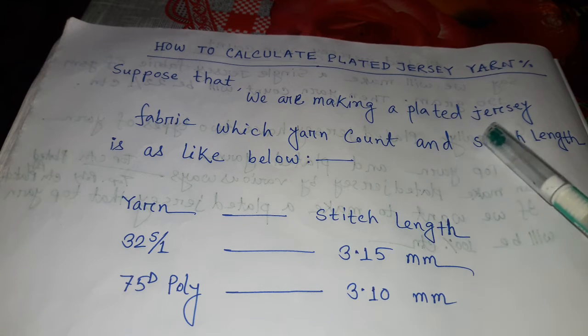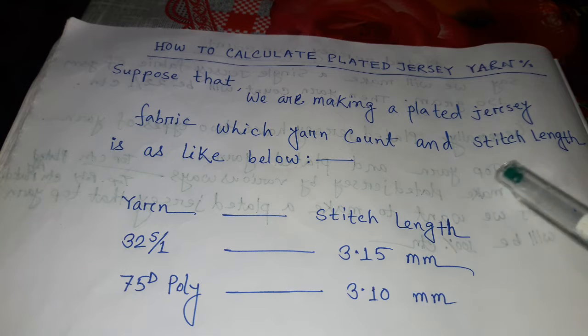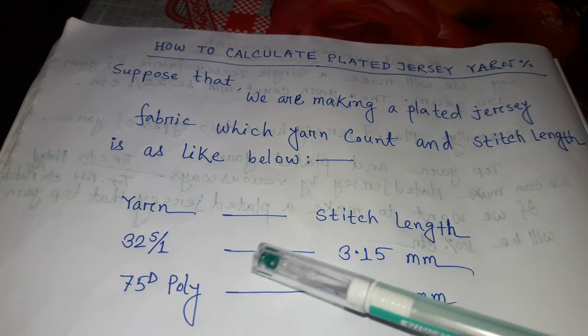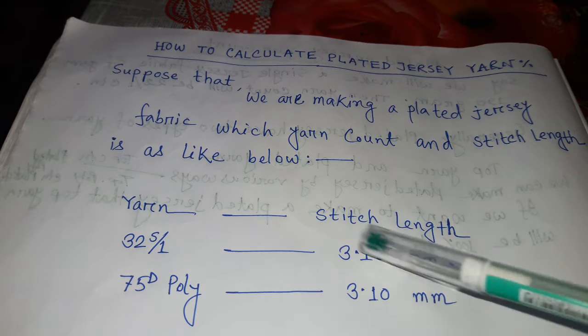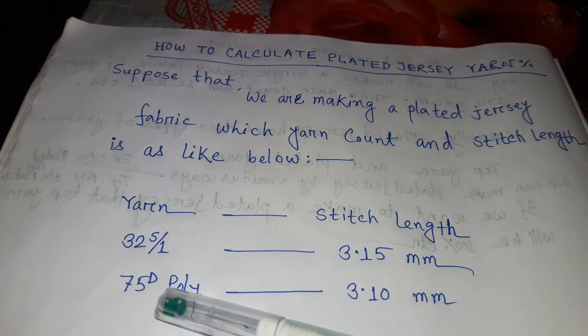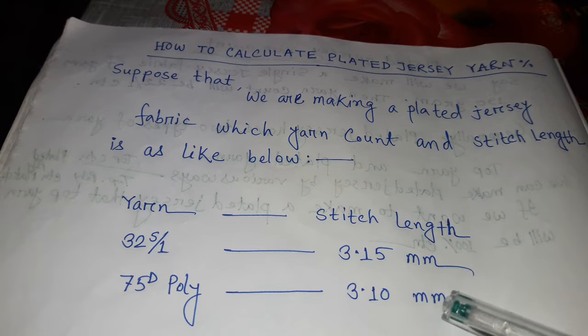We are making a plated jersey fabric with yarn count and stitch length as like below: Yarn 32 single, stitch length 3.15 millimeter; 75 denier polyester, 3.10 millimeter stitch length.